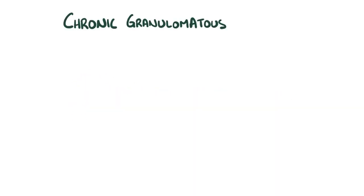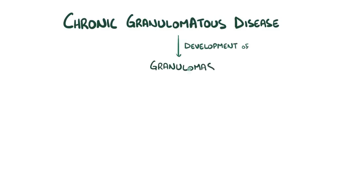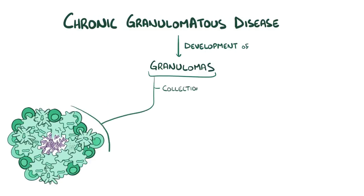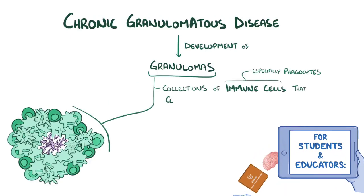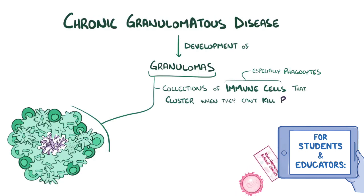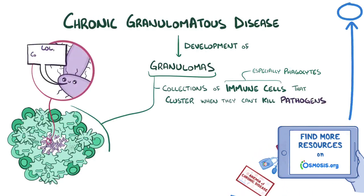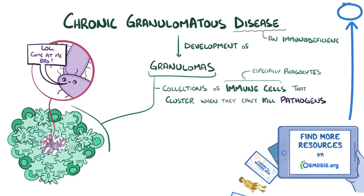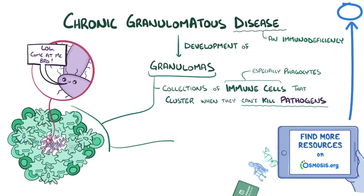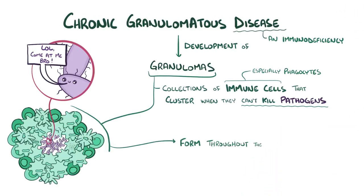With chronic granulomatous disease, 'granulomatous' refers to the development of small nodules called granulomas. Granulomas are collections of immune cells, especially phagocytes, which cluster together when they can't kill invading pathogens like bacteria or fungi. So chronic granulomatous disease is an immunodeficiency where phagocytes are unable to kill pathogens, and instead they form granulomas throughout the body.